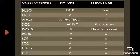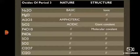Regarding structure: the first three oxides — sodium oxide, magnesium oxide, and aluminium oxide — have ionic crystalline structure. Silicon dioxide has a giant covalent structure. The remaining oxides of phosphorus, sulfur, and chlorine have molecular covalent structure. We will discuss them one by one in detail.